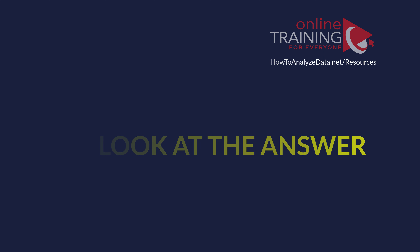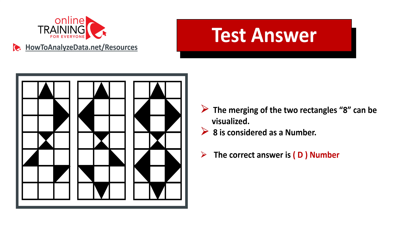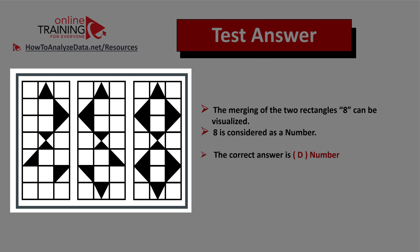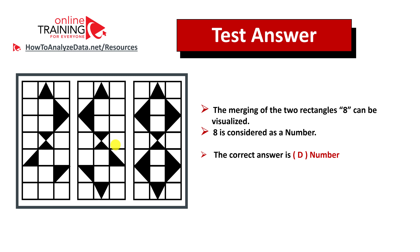Did you figure out the solution? Let's continue to see how we can get to the correct answer together. Upon merging the two rectangles, you can see that the number eight can be visualized, and eight is a number. So the correct answer is Choice D, number. Hopefully you've nailed this question and now know how to answer similar problems in the test.